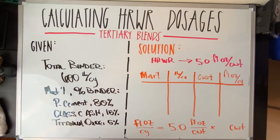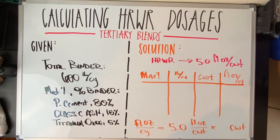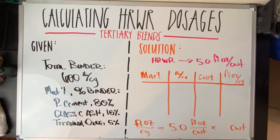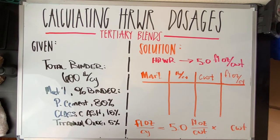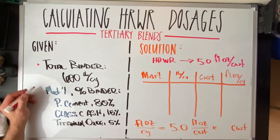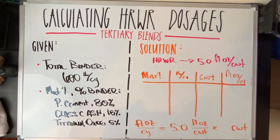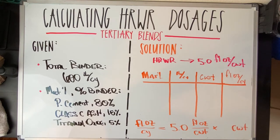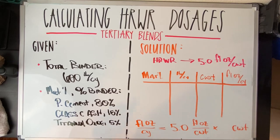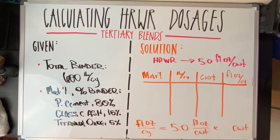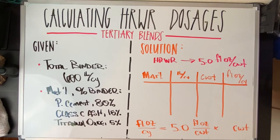Good afternoon, ladies and gentlemen. Dr. John Belkowitz here. We are diving into calculating high-range water reducing dosages based on the different types of blends that we're using for this binder. Calculating high-range water reducers in fluid ounces per cubic yard — you might not have to do this on a daily basis, but no matter where you are in the critical path of the construction process, you'll need this information. We've got Haley over here helping us out with some numbers.